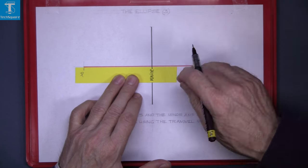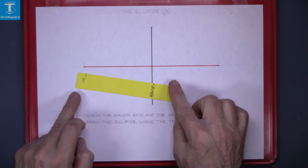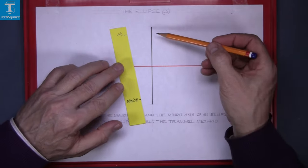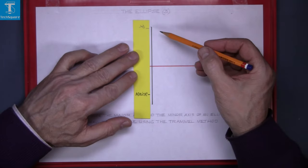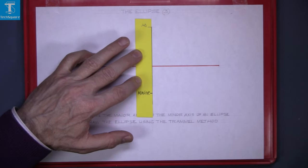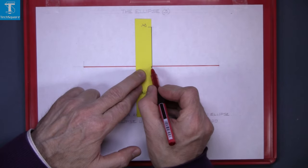So that point must stay on the minor axis. Now rotate the trammel around until you get point P at the top of the minor axis. And now mark the position of the major axis. I'm using the red pen because I've drawn the major axis in red.